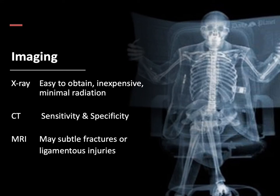Lastly, there's the option of obtaining an MRI of the C-spine, which can be used to detect subtle fractures not picked up by CT or to detect ligamentous injuries. Both CT and MRI may also be completed with angiography to evaluate for arterial or venous injuries, particularly vertebral artery injury.